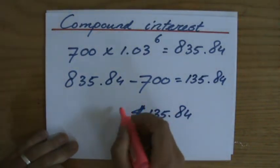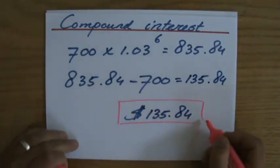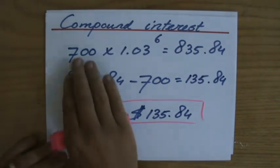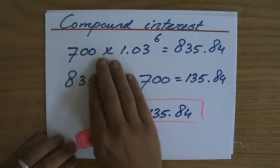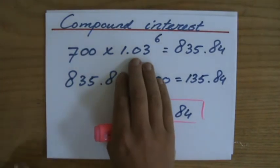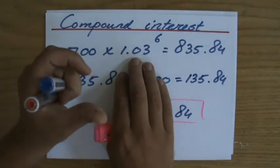which is still a very fair amount of money they give to me. So my starting capital, 700 compound interest, so times 1.03, because I get 3% per year. But I'm not leaving it there for one year, now I'm leaving it for six years.